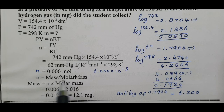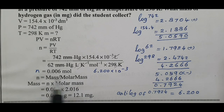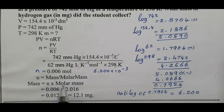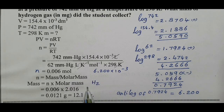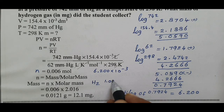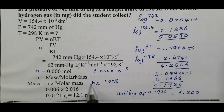Now we calculate the mass using the formula: mass = number of moles × molar mass. Hydrogen gas has the molecular formula H₂. The atomic mass of hydrogen is 1.008, so the molar mass of H₂ = 2 × 1.008 = 2.016 g/mol.